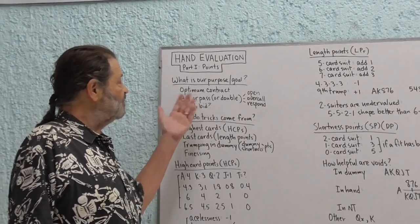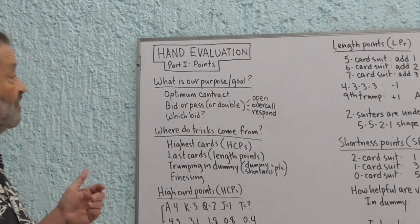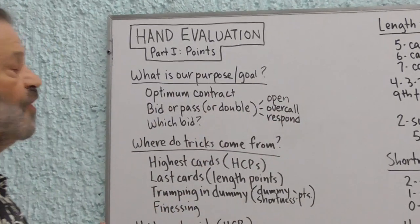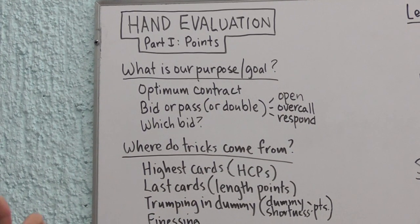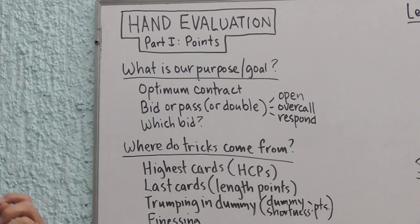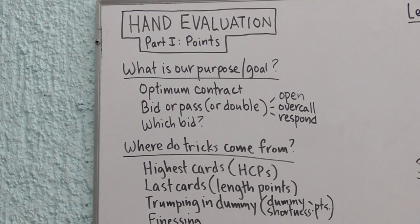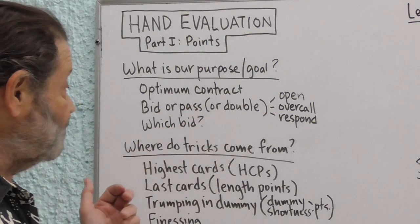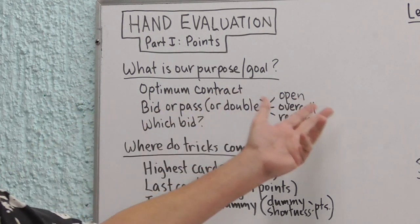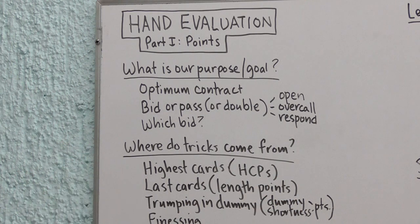We have to make the decision whether to bid or pass or double in some cases and whether our hand is good enough to open. If it is good enough to open, should we open it at the two level or the one level? Maybe it's a weak two, but maybe it's a strong two-club hand. If right-hand opponent is open, do we have a hand that's appropriate for overcalling? Do we have the strength? We need a way to measure the strength of our hand so that we can make these decisions. Do we have enough strength to respond to partner's opening bid? And if so, which bid?